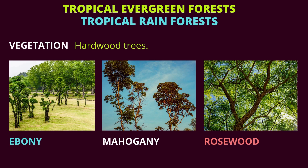What kind of trees grow in the tropical evergreen forests? They are hardwood trees. Some of the names of the trees are ebony, mahogany, and rosewood. These kinds of trees grow in the tropical rainforests.